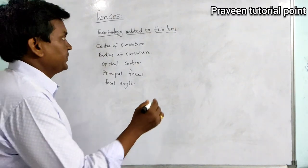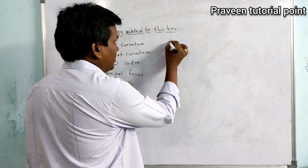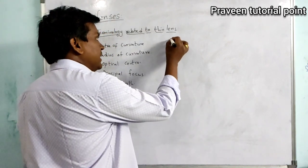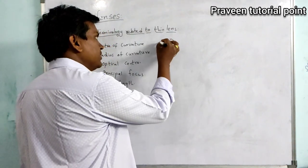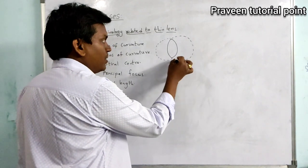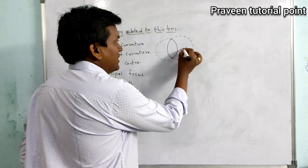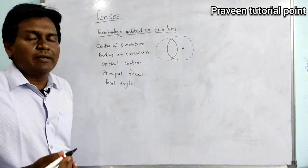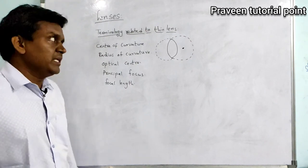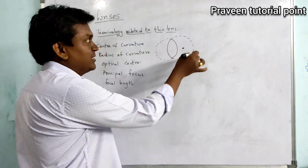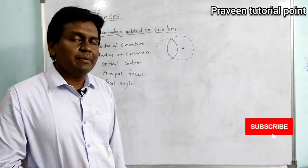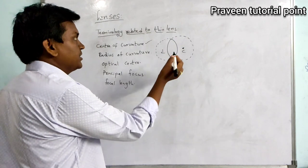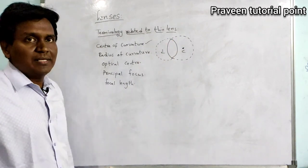Coming to the center of curvature: if you consider a convex or concave lens — for example, a biconvex lens — these lenses are part of a sphere. If you imagine them as part of a complete sphere, that sphere has a center. The center of the imaginary sphere is called the center of curvature. There is no actual sphere; we are imagining it. So the center of that imaginary sphere is the center of curvature.